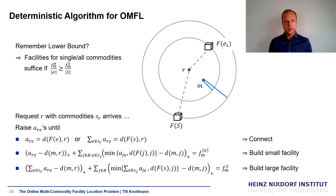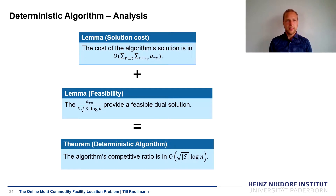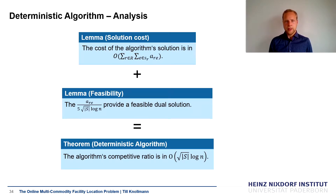Note that when considering a large facility, all commodities of R together invest their variable A_{R,E}, because they all benefit — the connection cost R pays to a large facility is only paid once. The analysis shows that the cost of the algorithm's solution is bounded by the sum of all dual variables. Dividing the dual variables by 5·sqrt(s)·log(n) yields a feasible dual solution, and since any feasible dual solution lower-bounds any primal solution, it also lower-bounds the optimal. The algorithm's competitive ratio is O(sqrt(s) log n).